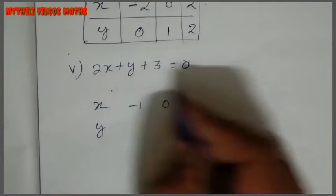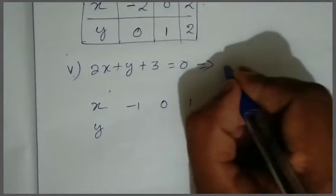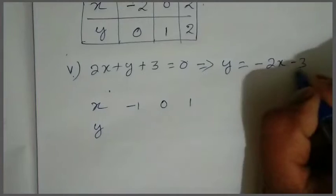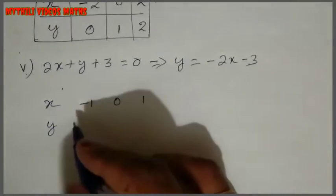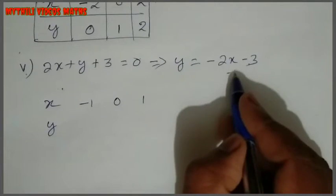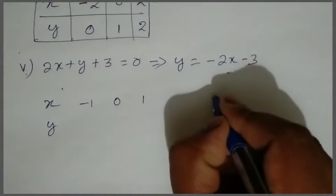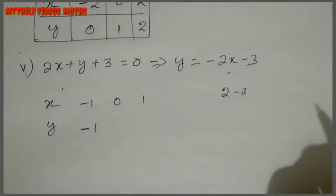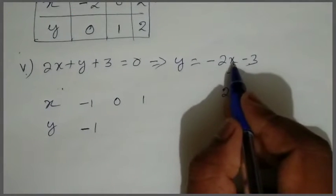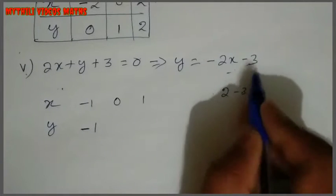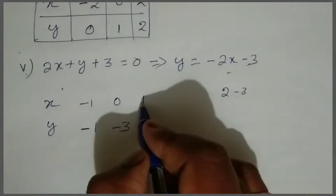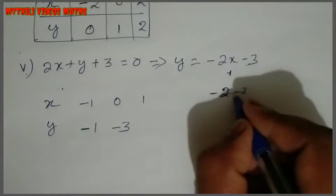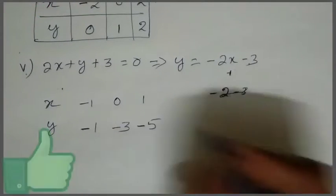For x = -1, 0, 1. Rearranging: y = -2x - 3. Apply x = -1: y = 2(-1) - 3 = -1 - wait, y = -2(-1) - 3 = 2 - 3 = -1. Next x = 0: remaining is -3, so y = -3. Apply x = 1: -2(1) - 3 = -2 - 3 = -5.